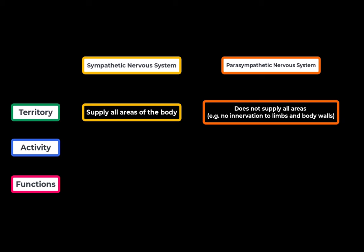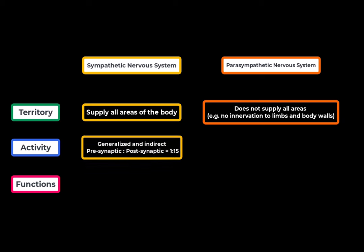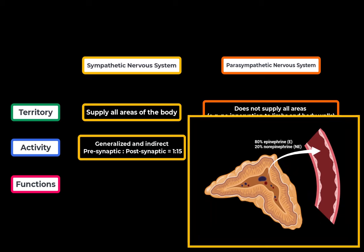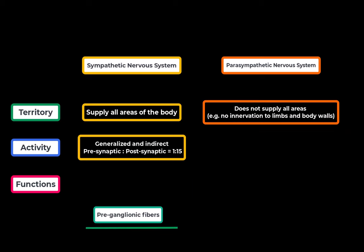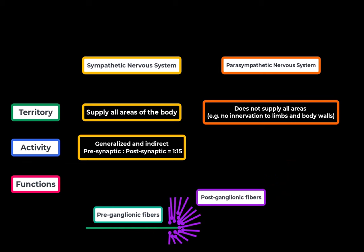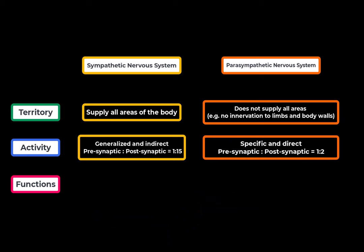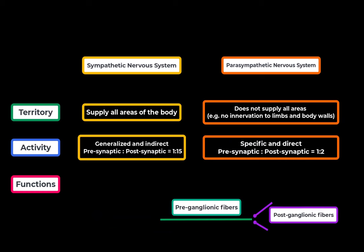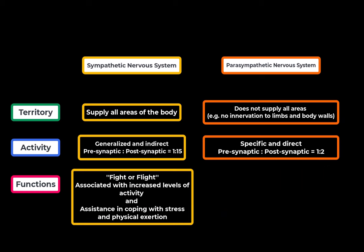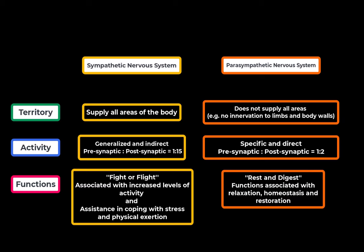In terms of activity, when you activate the sympathetic nervous system, you get a more generalized and indirect effect. This is because you have a large amount of catecholamines circulating in the blood, and also because the ratio between pre- and postganglionic fibers is approximately 1 to 15 or more — so 15 or more postganglionic fibers are activated from just one preganglionic fiber. If the parasympathetic is stimulated, the ratio is approximately one preganglionic fiber to two postganglionic fibers, giving a more specific response. In terms of function, sympathetic is associated with increased activity and coping with stress, while parasympathetic is associated with relaxation, homeostasis, and restoration.